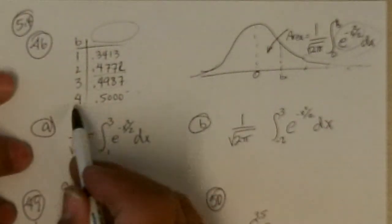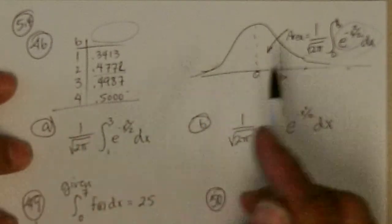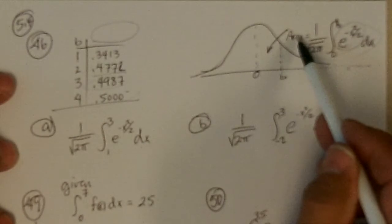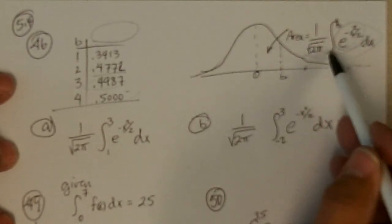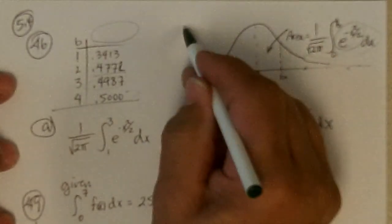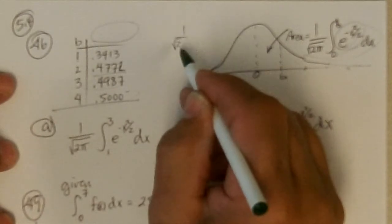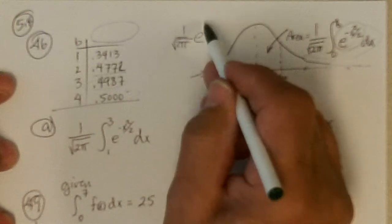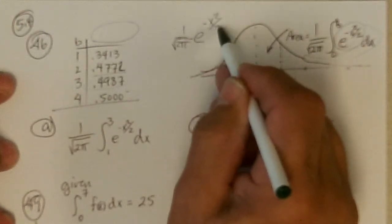So anyway, that's what this table and this graph is talking about. The area under the normal bell-shaped curve, the bell-shaped curve is 1 over the square root of 2 pi, e to the negative x squared over 2.